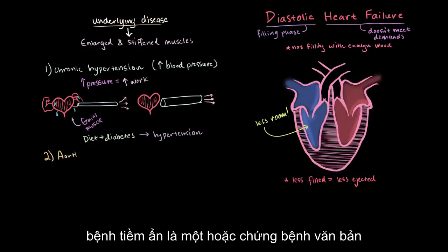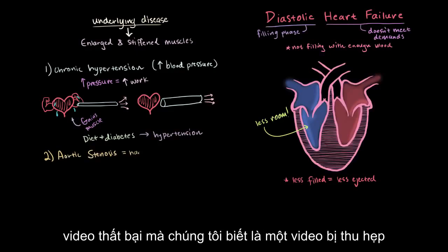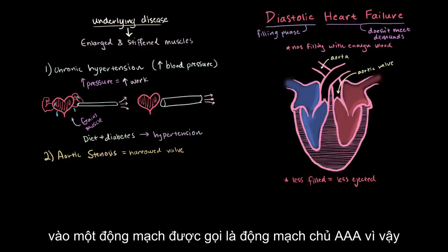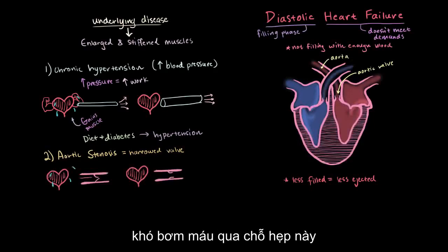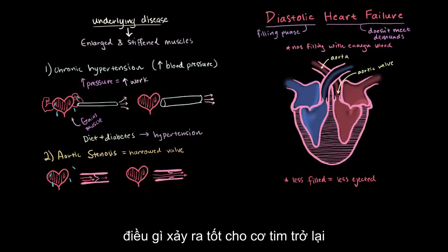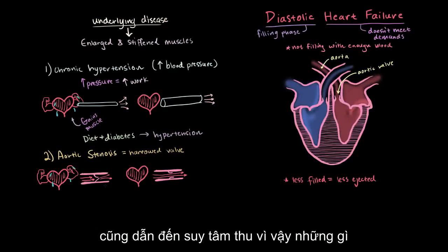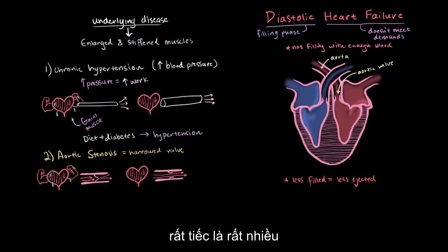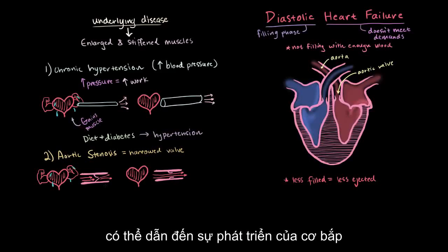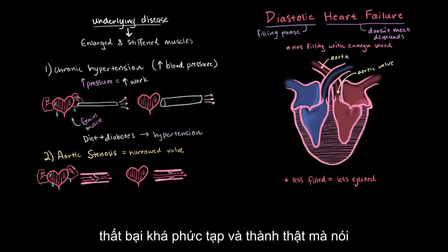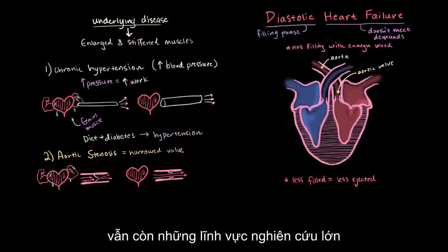The second underlying disease is aortic stenosis — a narrowed aortic valve. That valve goes from the left ventricle into the aorta. Similar to hypertension, it's a lot harder to pump blood through this narrowed opening, and the heart muscle bulks up and gains muscle to try to pump harder through this smaller valve. This is tricky because we know aortic stenosis can also lead to systolic failure. Unfortunately, a lot of the mechanisms behind why it might lead to muscle growth in one case versus serious weakening in another are pretty complex, and honestly a lot of these mechanisms are still unknown and are big areas of research.